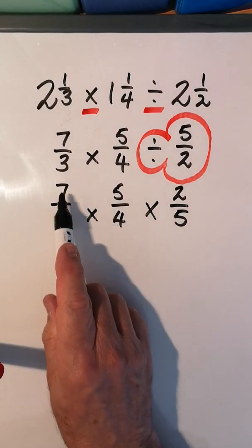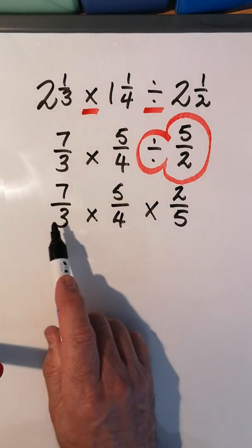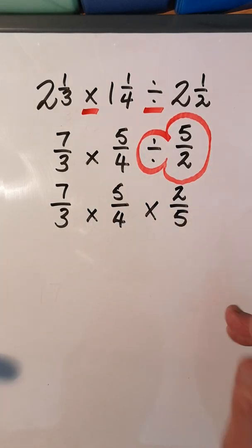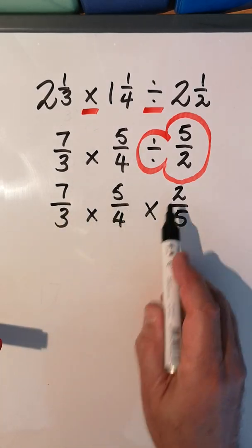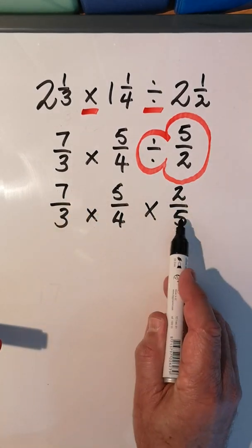Now let's not go down this route: 7 × 5 × 2 and get a number, 3 × 4 × 5 and get a number. Let's first simplify. Up and down or across - you can go from there to there, it doesn't matter - from there to there or there to there, any way you can except across the sign.